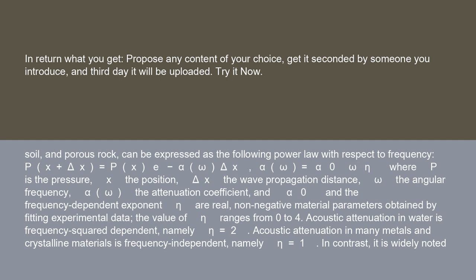The power law formula is: p(x + Δx) = p(x) · e^(−α(ω) · Δx), where α(ω) = α₀ · ω^η. Here, p is the pressure, x the position, Δx the wave propagation distance, ω the angular frequency, α(ω) the attenuation coefficient, and α₀ and the frequency-dependent exponent η are real, non-negative material parameters obtained by fitting experimental data. The value of η ranges from zero to four.